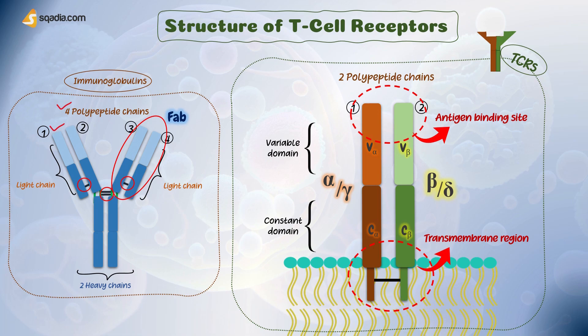Just like antibodies, both chains of TCRs are also linked via disulfide bonds. That was all about the structure of TCRs. If you compare it with that of immunoglobulins, you can easily memorize it for a long time.